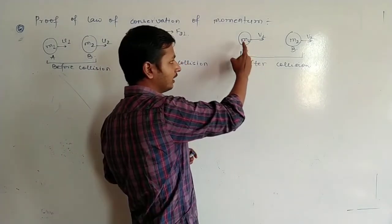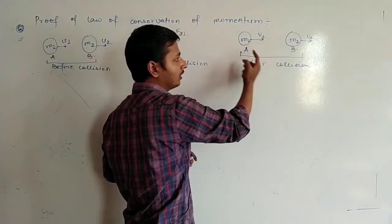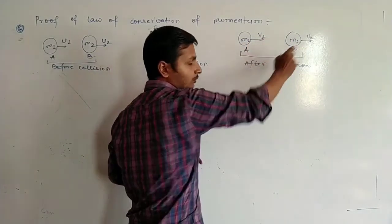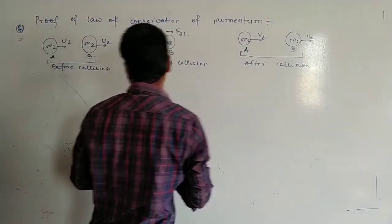And here is m1 and m2. This is the final velocity of m1 and m2, which is v1 and v2.